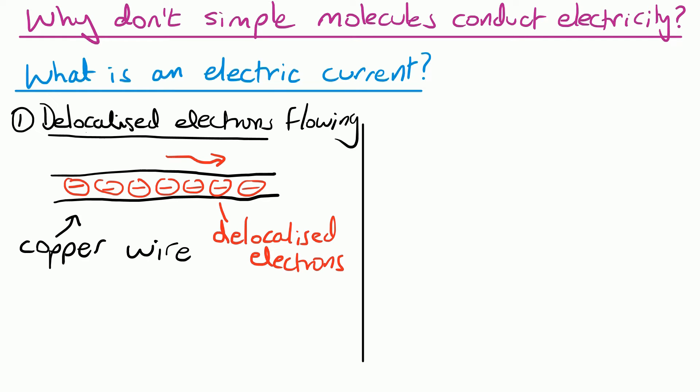Like if you have a copper wire, the delocalized electrons will flow down the wire. And we'll say more about that when we look at the bonding in metals.